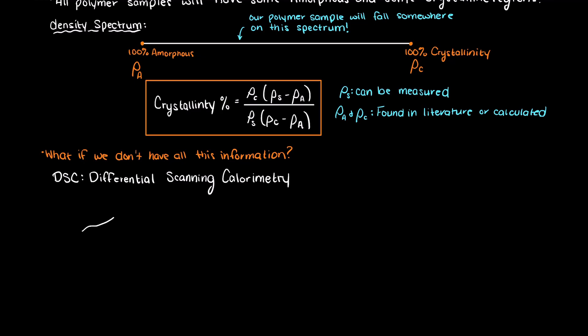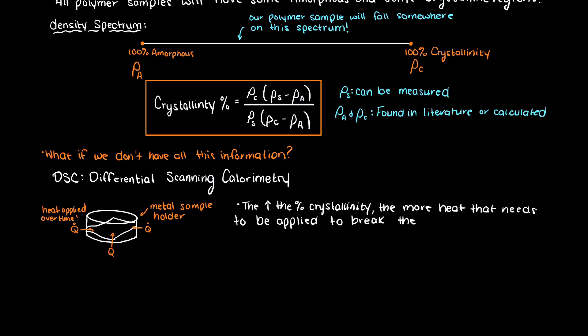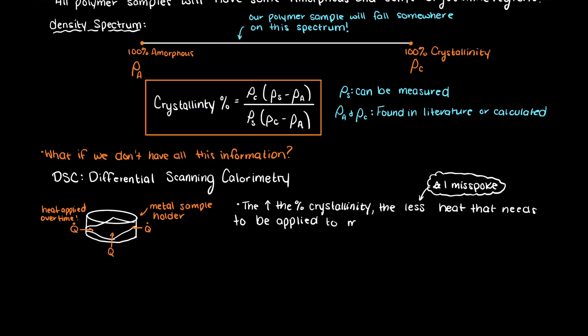DSC works by placing our polymer sample in the machine and it measures the amount of heat it takes to melt our polymer using known values. The higher the crystallinity of the polymer sample, the more heat that needs to be applied to break the tighter intermolecular bonds of the crystalline regions.